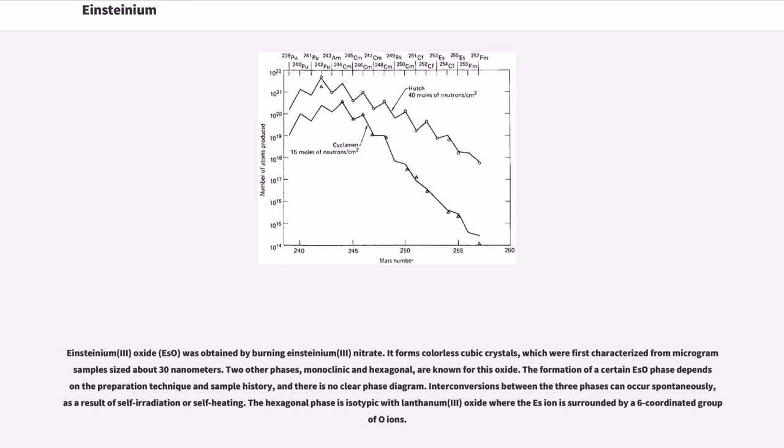Einsteinium-3 oxide, Es2O3, was obtained by burning Einsteinium-3 nitrate. It forms colorless cubic crystals, which were first characterized for microgram samples sized about 30 nanometers. Two other phases, monoclinic and hexagonal, are known for this oxide. The formation of a certain Es2O3 phase depends on the preparation technique and sample history, and there is no clear phase diagram. Interconversions between the three phases can occur spontaneously, as a result of self-irradiation or self-heating. The hexagonal phase is isotypic with lanthanum-3 oxide where the Es-ion is surrounded by a six-coordinated group of oxygen ions.